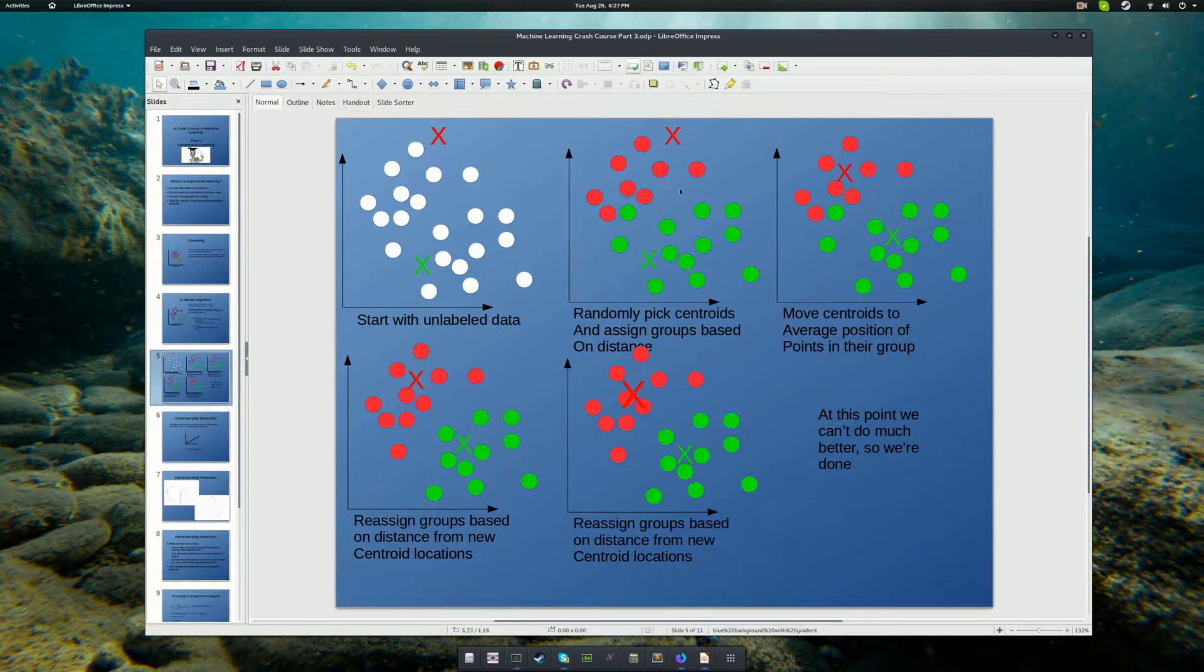After randomly assigning, we calculate the distance from each of these points to the centroid and assign them based on which centroid they are closest to. So, here you can see that all of the points that are closest to the green x get designated green, and all of the points closest to the red x get designated red.